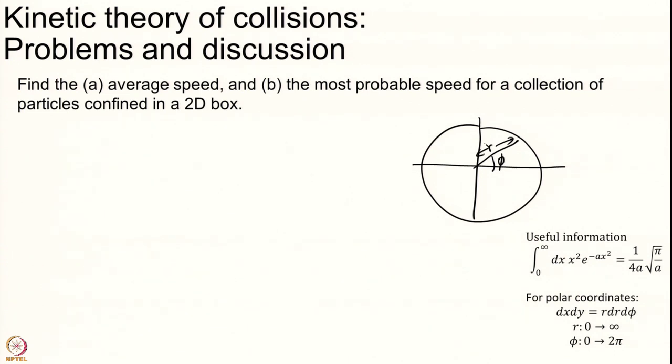We will take the rho that we had in the last slide and we want to move to p comma phi. This will be equal to now we will convert. What is our basis? p is root of px square plus py square and importantly we will see this thing here dpx dpy is mod p dp d phi.